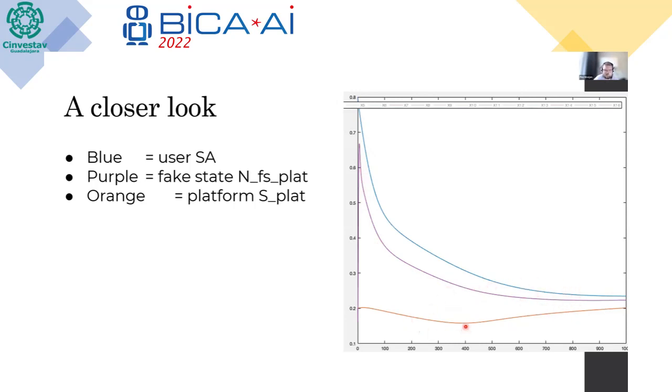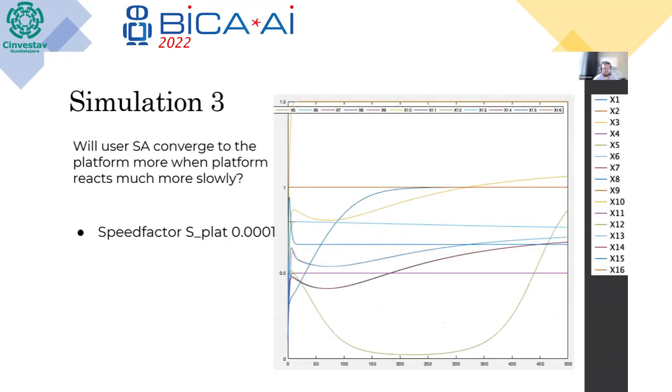And we also see again the slow influence of the platform itself changing. Then we had another idea. What happens if we make the actual platform slower to respond? So the algorithm is still fast, but the adjusting of the platform, so for instance making or producing new content, is more difficult.